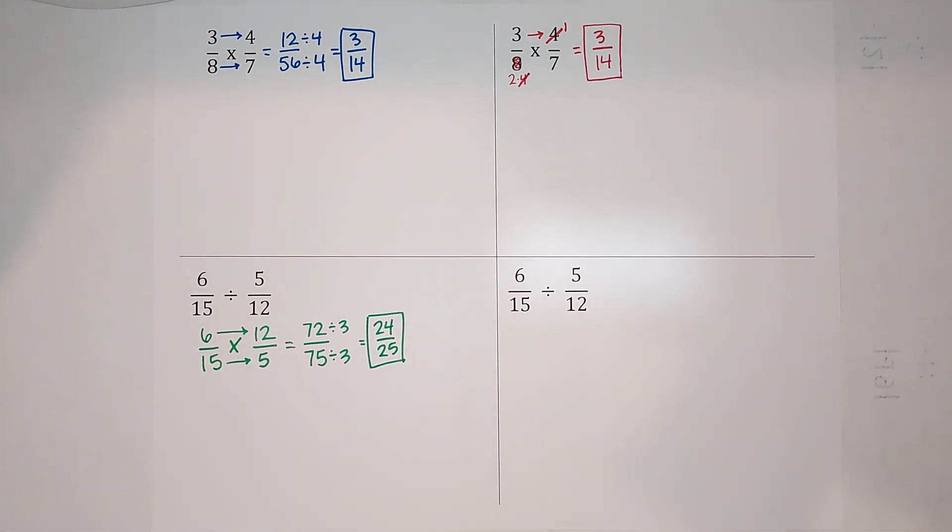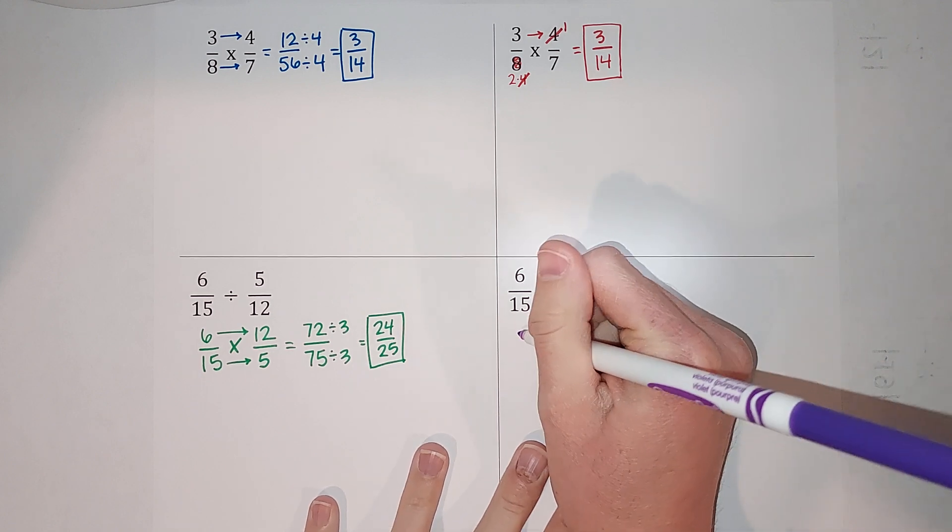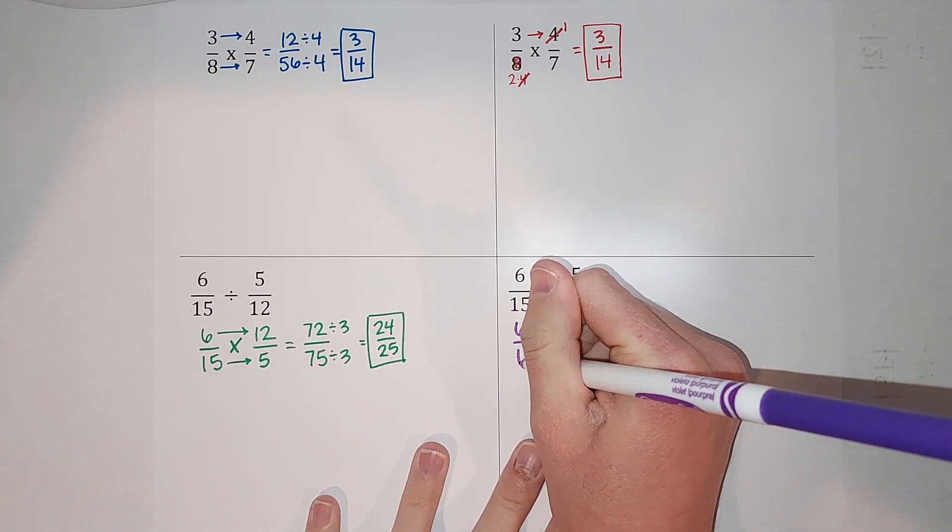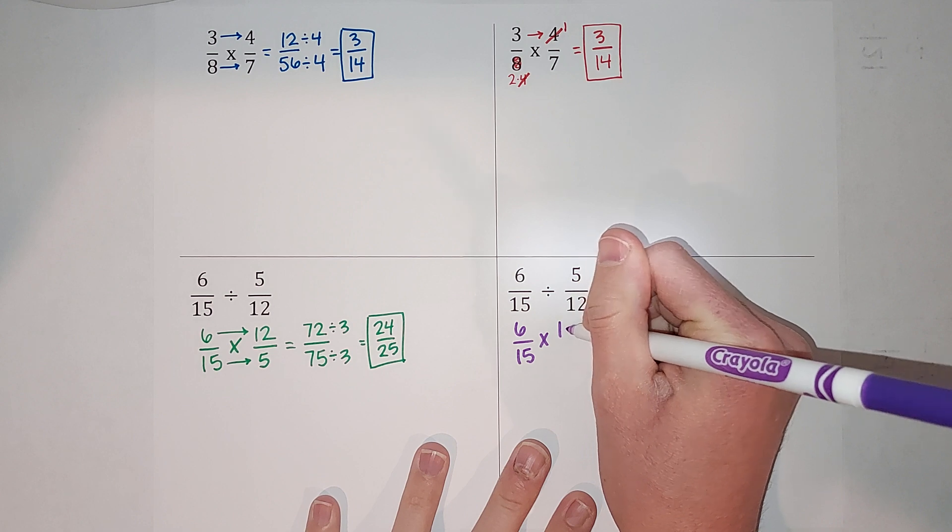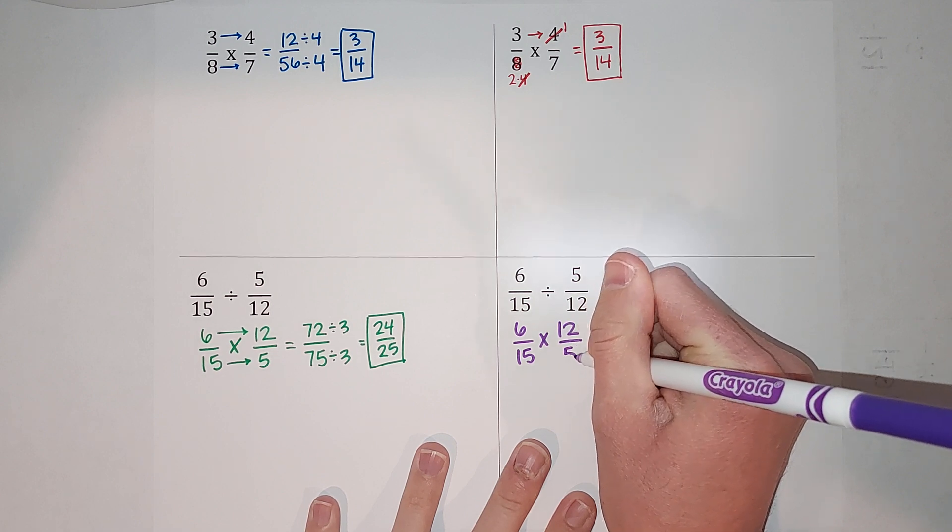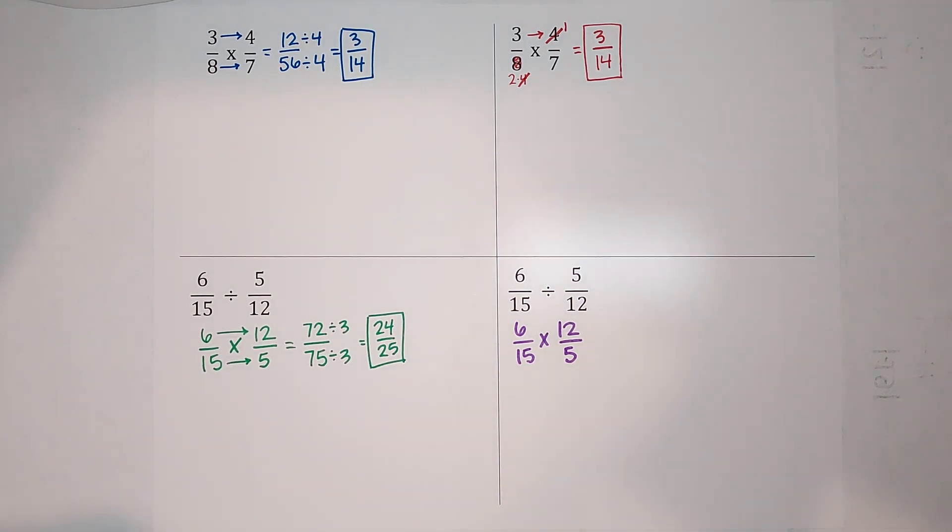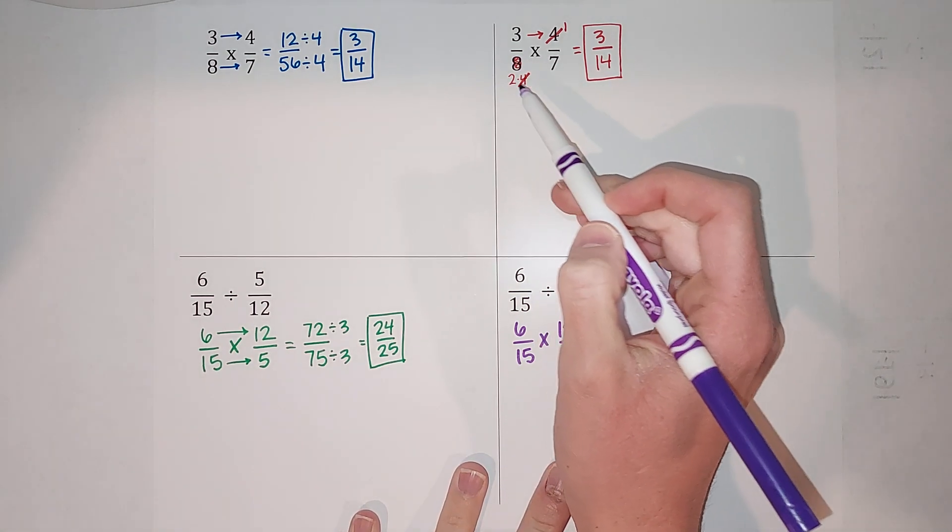We're going to do the same thing, but I'm going to cross out before. So basically, simplify before is what you could call it. Same thing to begin with, 6 fifteenths multiply by the reciprocal 12 fifths. And because I have a better purple than that... This time I'm going to notice that 12 and 15 are both divisible by 3, right? So I could write it out like I did here.